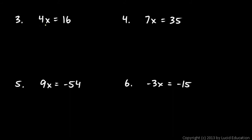On this first one, 4x equals 16. I'm going to divide by 4 on both sides. On the left side, the 4s cancel out, and that leaves me with x equals 16 divided by 4, which is 4.